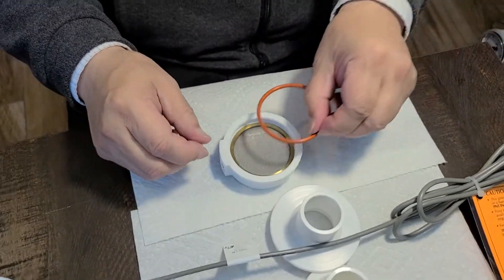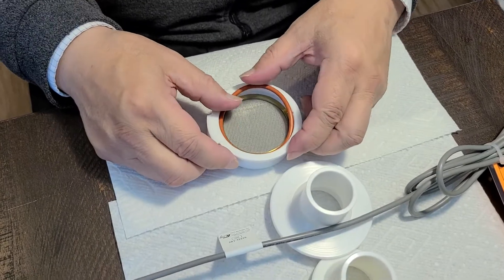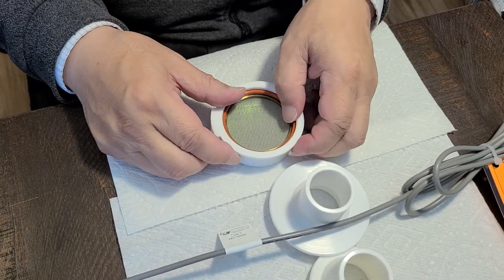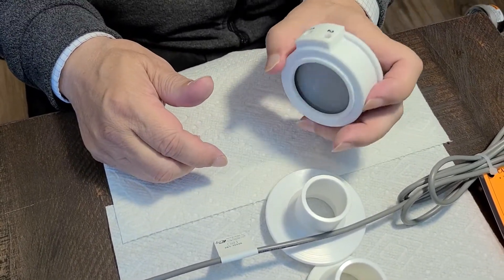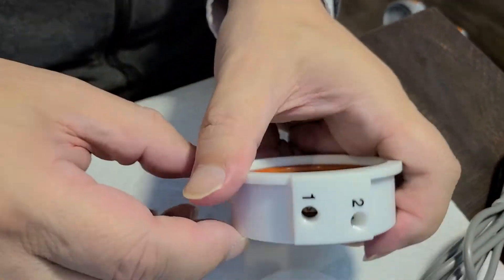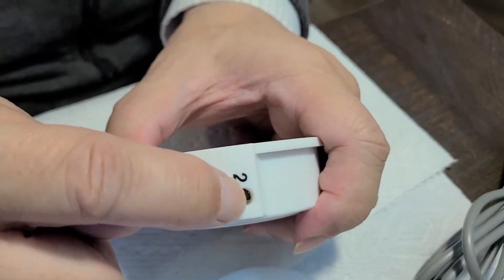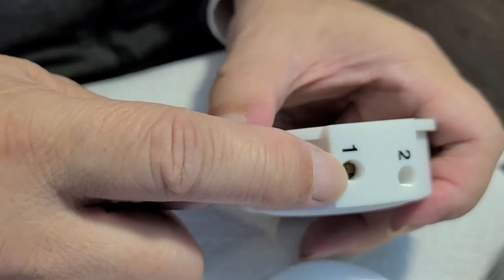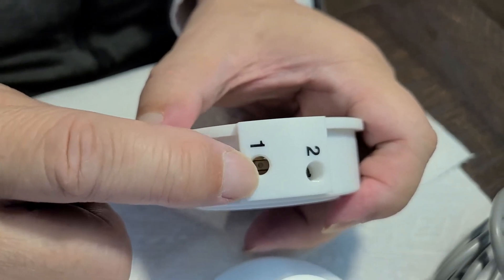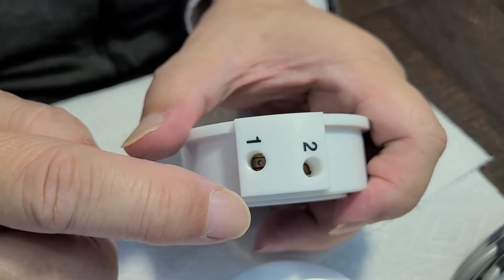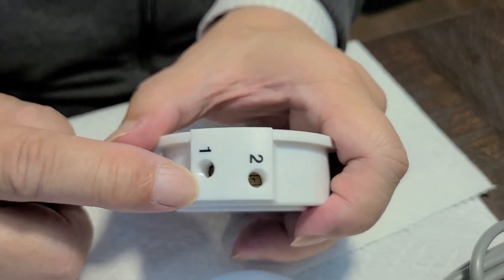Then we put the orange o-ring in place. This time we double check the black holes on screen two and screen one. You should see the black holes. Otherwise, your screen sequence may be wrong.